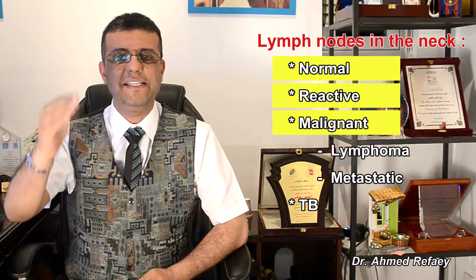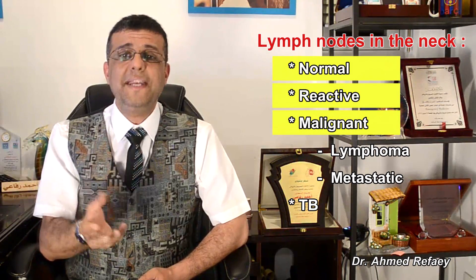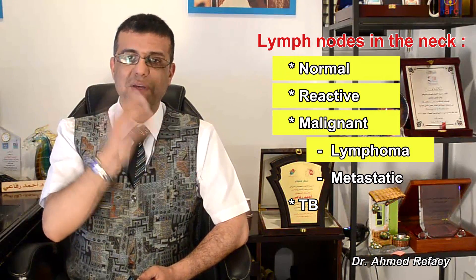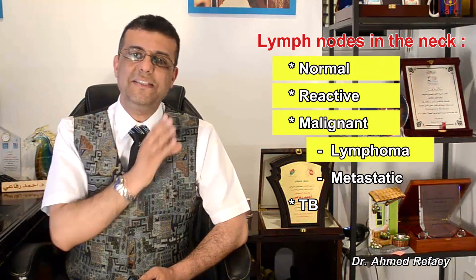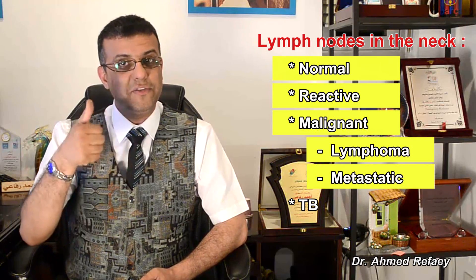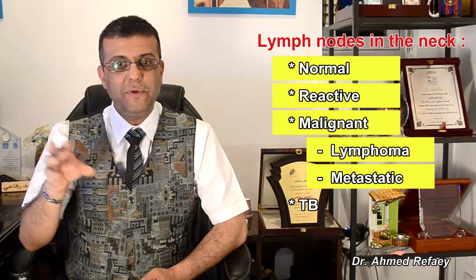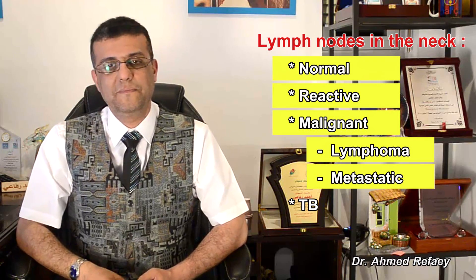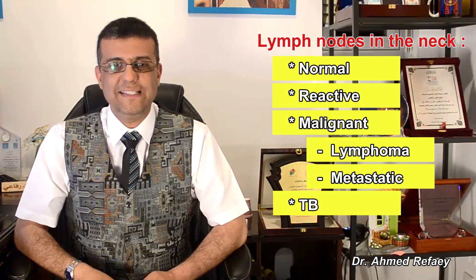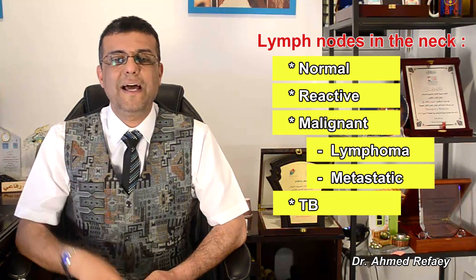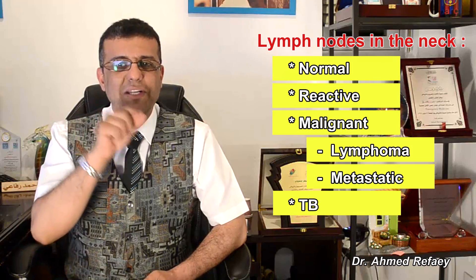You can raise the possibility of lymphomatous lymph node if there is internal reticulation, and metastatic lymph node if there is coagulation necrosis, eccentric cortical hypertrophy, cystic necrosis, ill-defined borders, or internal punctate calcification. The tuberculous lymph node is rounded or oval, with loss of normal hilum, matted together, with internal cystic necrosis. This covers everything regarding the diagnosis of lymph nodes in the neck by ultrasound examination.